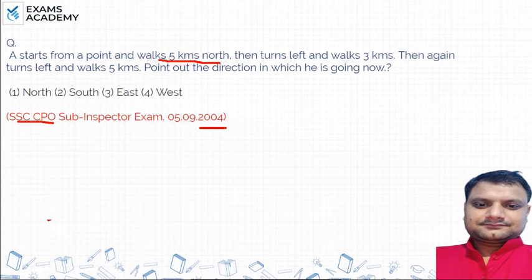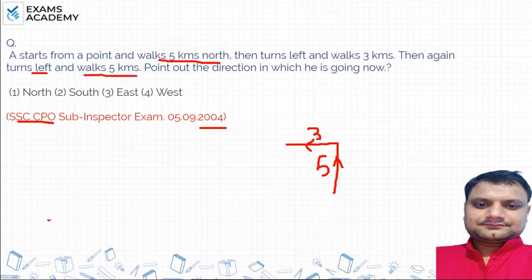This is the starting point. Start from a point and walks 5 kilometers towards north direction. I have made this statement that it goes 5 kilometers north. Then it turns left and walks 3 kilometers. If we are going left, then it turns left and walks 5 kilometers. Then it turns left and walks 5 kilometers. Then it goes left and walks 5 kilometers.